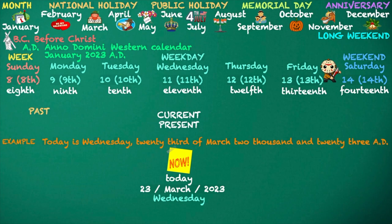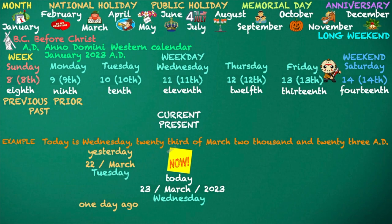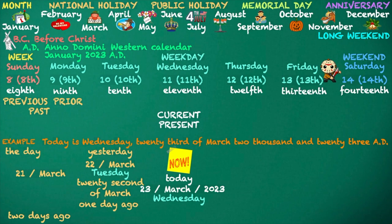Past. Previous. Prior. One day ago — Yesterday. Yesterday: Tuesday, 22nd of March. Two days ago — the day before yesterday. Monday, 21st of March.